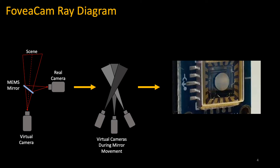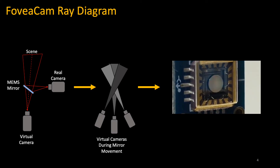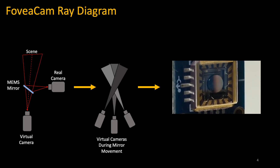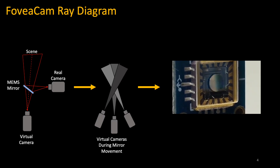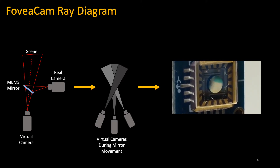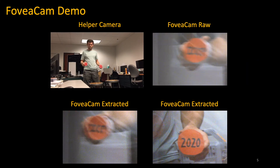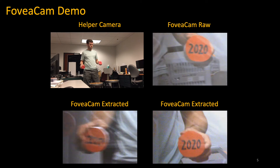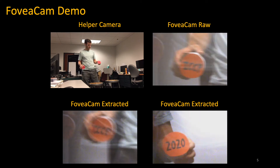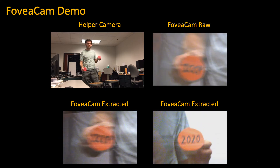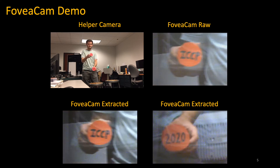Here's a demonstration of the MEMS mirror tilting in a 2D plane. Here is a demonstration of FoveaCam. The top right is the raw footage of the MEMS mirror swiveling between the two red objects in the scene, and the bottom videos are the simultaneous extracted views from the raw footage.